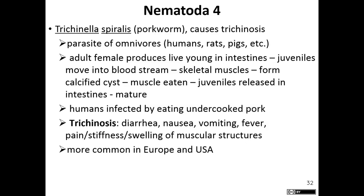Trichinella spiralis is our pork worm. This one causes trichinosis. It is a parasite of omnivores — so humans, rats, pigs, any organisms that eat both meat and vegetables. The adults produce live young in the intestines, and the juveniles can move into the bloodstream and get into our skeletal muscle. Humans are infected by eating undercooked pork typically. Trichinosis causes diarrhea, nausea, and vomiting, and it's actually more common in Europe and the U.S. than in other areas of the world.